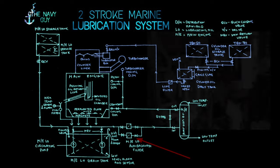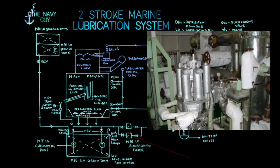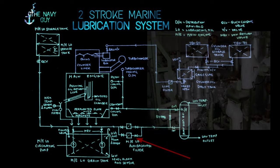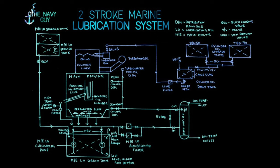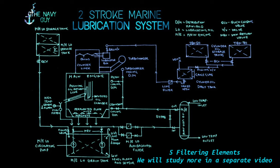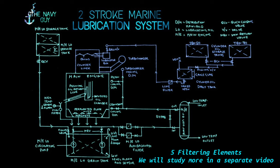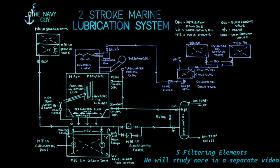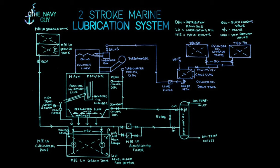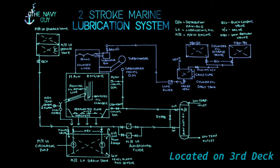From there, oil goes to auto backwash filters or duplex filters. Nowadays auto backwash filters are more commonly used. There are five filtering elements in the lube oil auto backwash filter, which is bigger than the fuel oil auto backwash filter. It works on the basis of pressure drop across the filter and is located on the engine room third deck.